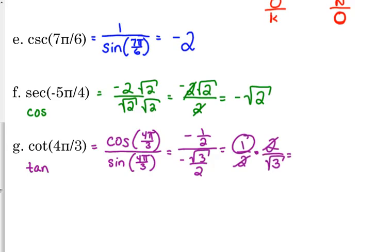There's still 1 on top, though. 1 over the square root of 3. We don't want to leave it like that. We've got to rationalize. So that is equal to the square root of 3 over 3.